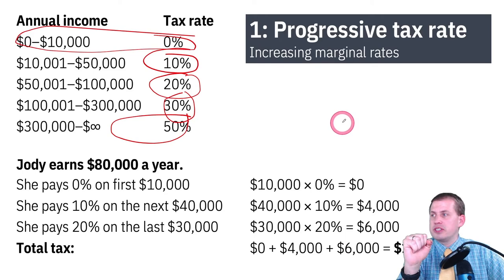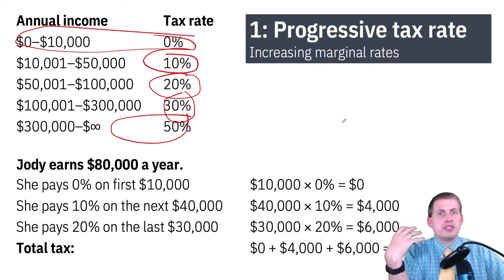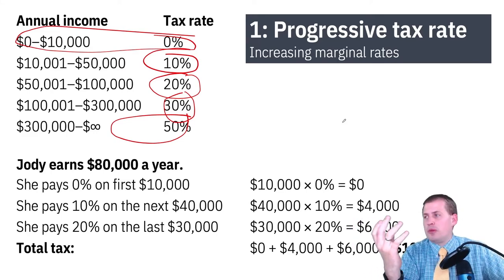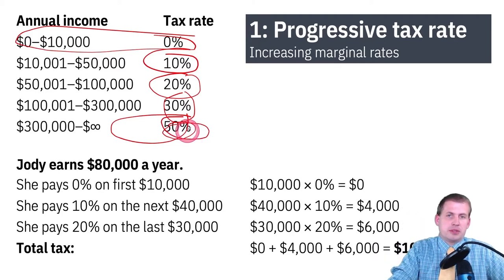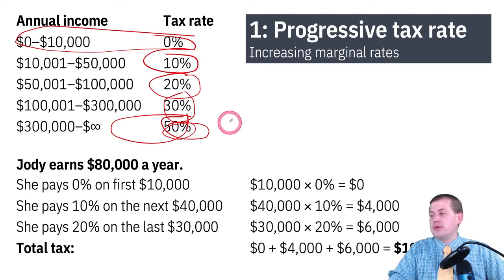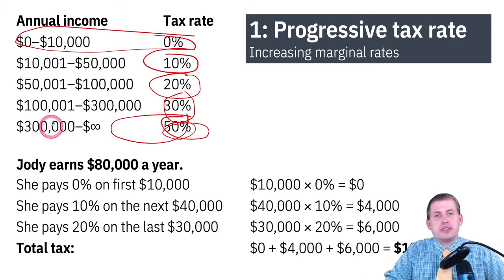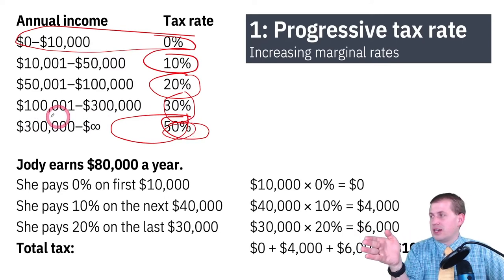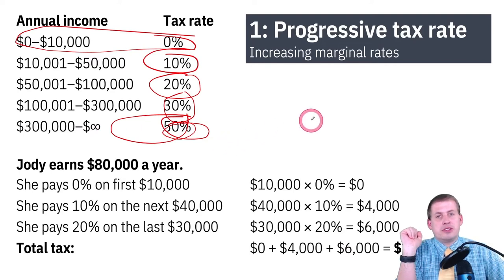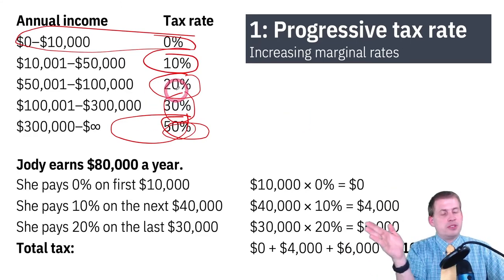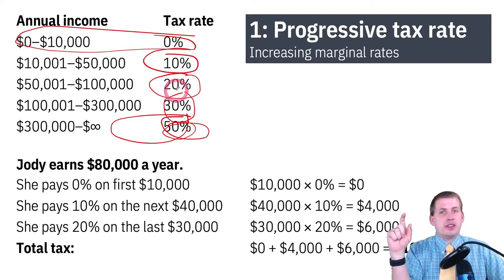A few years ago, Alexandria Ocasio-Cortez proposed increasing the top marginal tax rate to something really high — essentially raising that 50% bracket significantly higher. On Fox News and other right-wing outlets, they criticized her, saying she's just trying to take everybody's money and that if you earn $300,000 the government will take half, leaving you only $150,000. But that is not actually the case with a marginal tax system. It means you pay 50% only on any dollars you earn beyond $300,000.